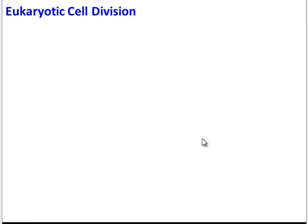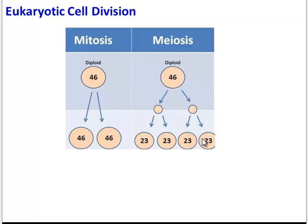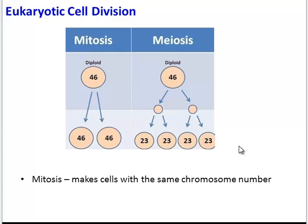Eukaryotic cell division can take one of two paths: mitosis, to produce identical cells, or meiosis, to produce genetically different sex cells, or gametes.